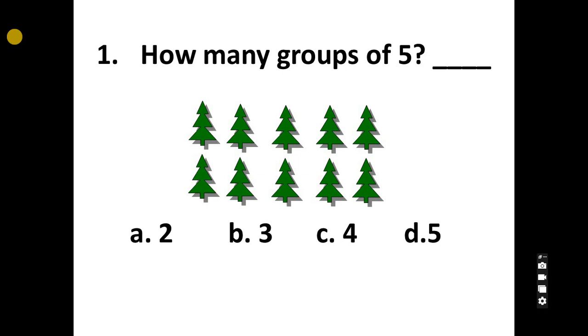How many groups of 5? A, 2, B, 3, C, 4, D, 5. The answer is 2.